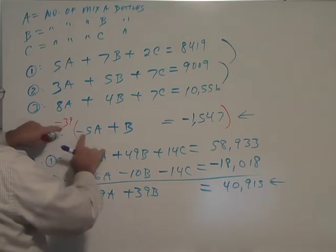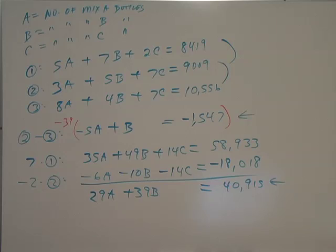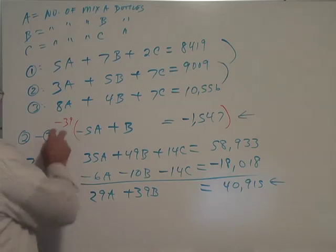And so negative 39 times negative 5 is, I don't know, big number, minus 195, I think. 5 times 39, positive 195 because we're multiplying two negatives.